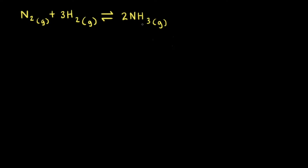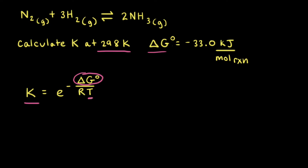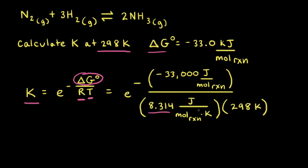Let's calculate the equilibrium constant K for the synthesis of ammonia from nitrogen and hydrogen at three different temperatures. Starting with 298 Kelvin: delta G naught at this temperature is negative 33.0 kilojoules per mole of reaction. We plug in delta G naught, the temperature in Kelvin, and the ideal gas constant R, which equals 8.314 joules per mole of reaction per Kelvin. Since R is in joules, we convert delta G naught: negative 33.0 kilojoules per mole of reaction equals negative 33,000 joules per mole of reaction, still with three significant digits.